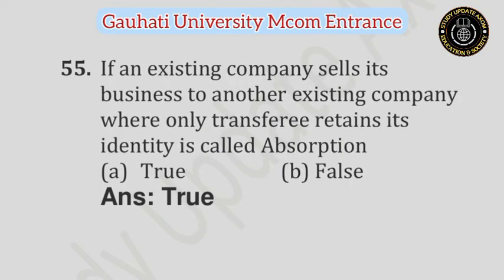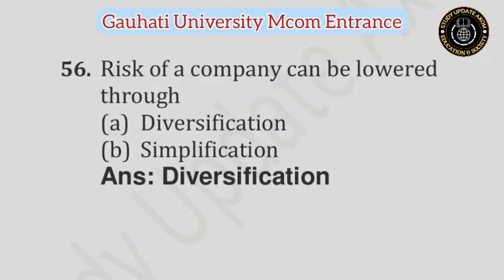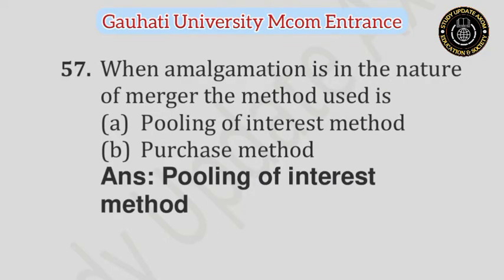Question number 55: If an existing company sells its business to another existing company where only the transferor loses its identity, it is called as absorption — Option A: True, Option B: False. Answer is True. Question number 56: Risk of a company can be lowered through — Option A: Diversification, Option B: Simplification. Answer is Diversification. Question number 57: When amalgamation is in the nature of merger, the method used is — Option A: Pooling of interest method, Option B: Purchase method. Answer is Pooling of interest method.